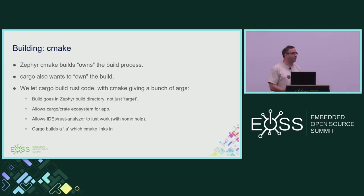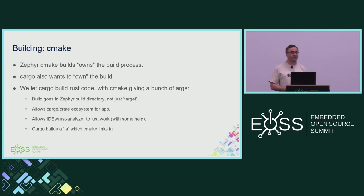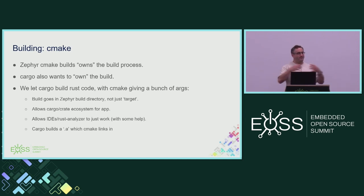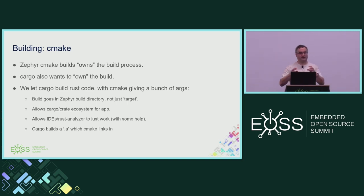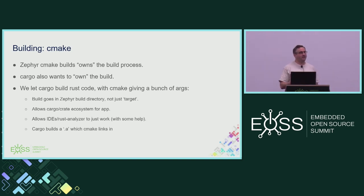So how do we build this? If you're familiar with Rust, it has cargo, which runs the world. You have a program, you type cargo build and get an executable. Zephyr has the same idea — you type west build, west flash. How do we mush these together? The cargo system has one thing you can do: tell it to build a library, and it will generate a .a file. We're going to let cargo do that. But it needs to know things that came from CMake — the target, what kconfig options are set, and other build-time information.